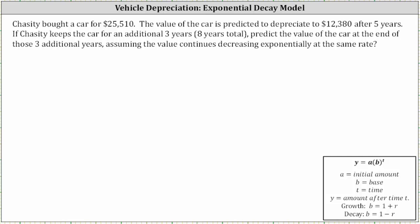Chastity bought a car for $25,510. The value of the car is predicted to depreciate to $12,380 after five years. If Chastity keeps the car for an additional five years, meaning a total of eight years, predict the value of the car at the end of those three additional years, assuming the value continues decreasing exponentially at the same rate.